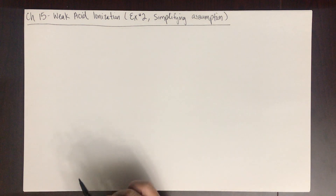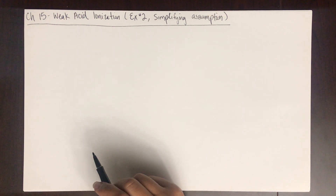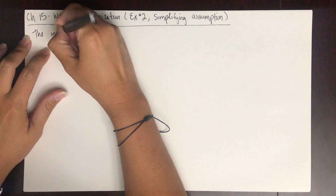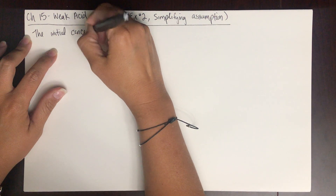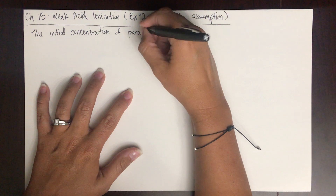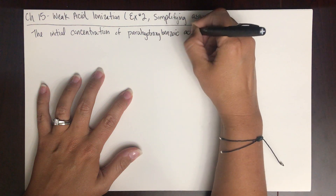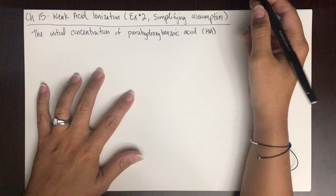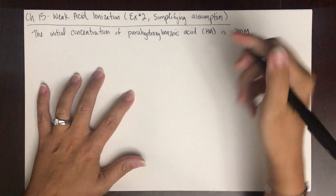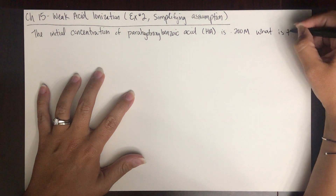Let's look at another example of a weak acid ionization. In this example, I'm going to show you something called the simplifying assumption. Here's the problem: the initial concentration of parahydroxybenzoic acid, which we are just going to call HA, is 0.200 molar. What is the pH?